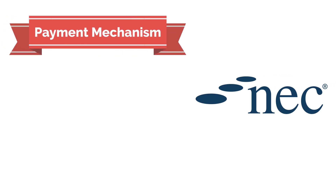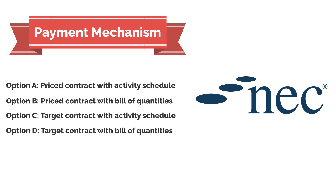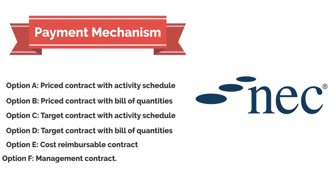The NEC suite of contracts allows for flexibility in selecting the preferred payment mechanism. This is dealt with under the main option clauses, which include: Option A, price contract with activity schedule; Option B, price contract with bill of quantities; Option C, target contract with activity schedule; Option D, target contract with bill of quantities; Option E, cost reimbursable contract; Option F, management contract; and Option G, term contract.